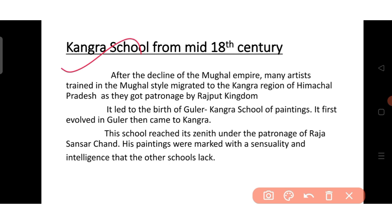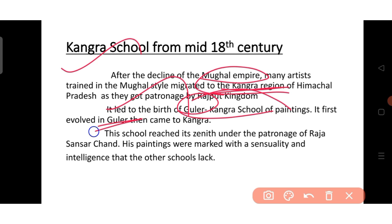The Kangra school of painting developed from the mid-18th century onwards. After the decline of the Mughal Empire, many artists trained in the Mughal style migrated to the Kangra region of Himachal Pradesh, where they received patronage from Rajput kingdoms. This led to the birth of the Guler-Kangra school of painting — first evolved in the region called Guler, then migrated to Kangra. This school reached its zenith under the patronage of Raja Sansar Chand. His paintings were marked with sensuality and intelligence that other schools lacked.